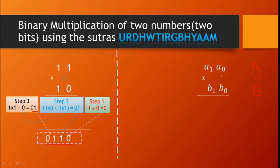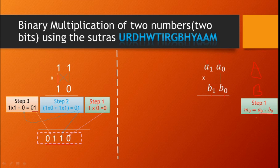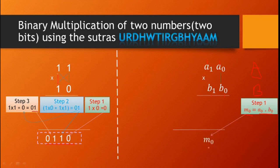Step 1 is the right-hand side bit multiplication: A0 into B0. In binary, multiplication is done using an AND gate, since only 1 AND 1 gives 1. So we implement this product using an AND gate, and its output is M0 — the first bit of the multiplier output result.